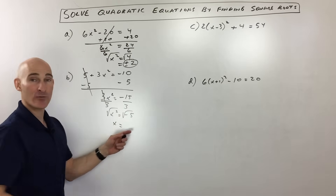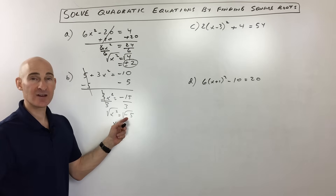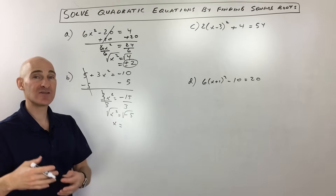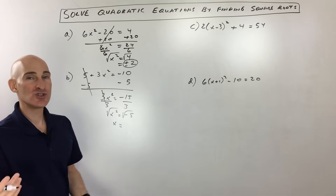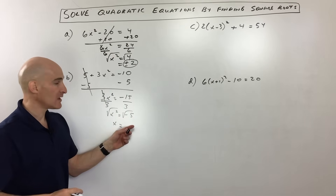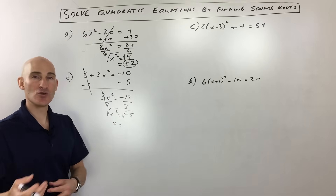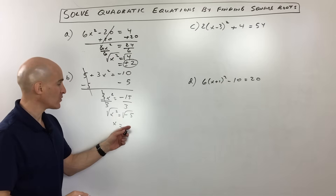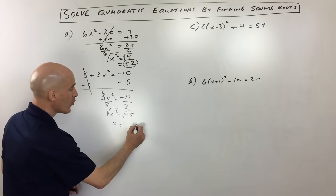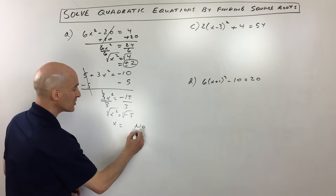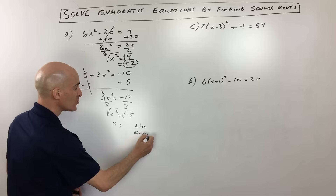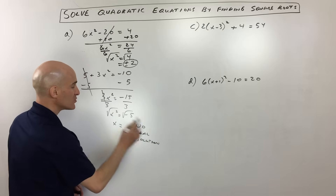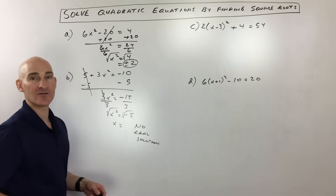We want to take the square root because that's the opposite of squaring both sides. But we have a problem here — we can't take the square root of a negative number. That's going to give us an imaginary number, which you usually get into in Algebra 2 and pre-calculus. So for this one, we're just going to say there's no real solution — it's an imaginary solution.